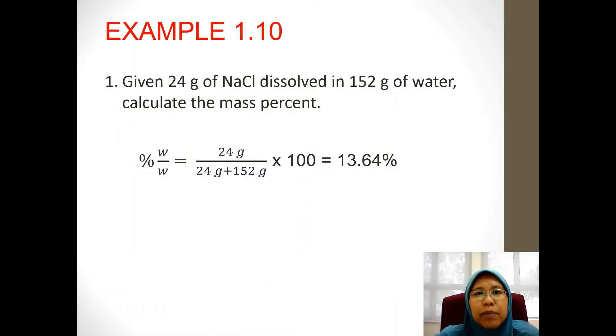Let's do example 1.10, number 1. Given 24 grams of sodium chloride dissolve in 152 grams of water, calculate the mass percent. So you are given 24, we divide 24 with total mass, 24 plus 152. So we get 13.64%, 1 mark.